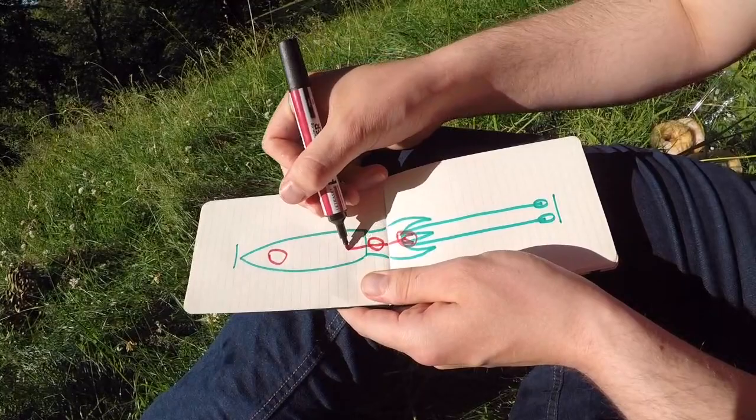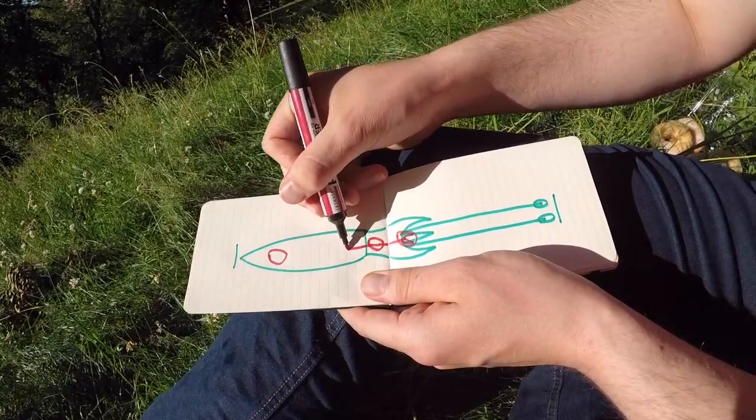So how does the giant squid get its food from here to here with the brain in the way? Well, to allow the food to pass through it, the giant squid's brain is in the shape of a donut.